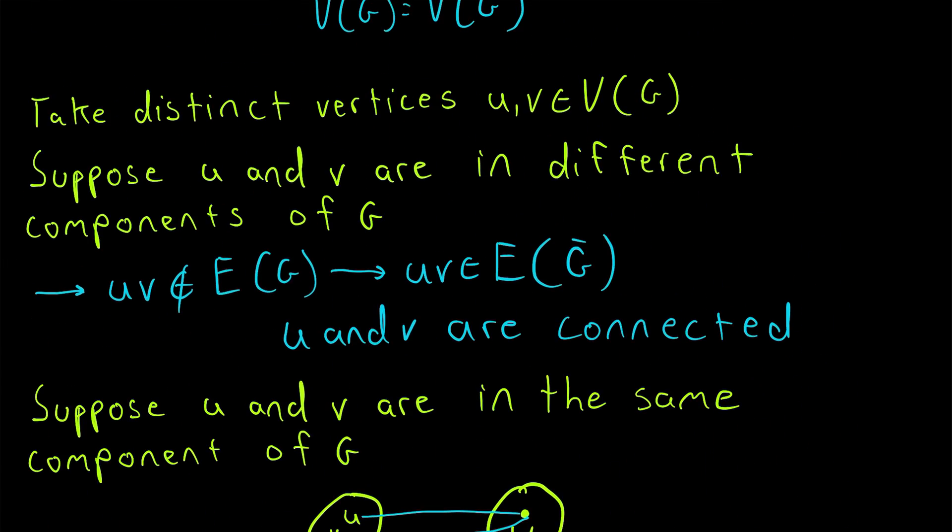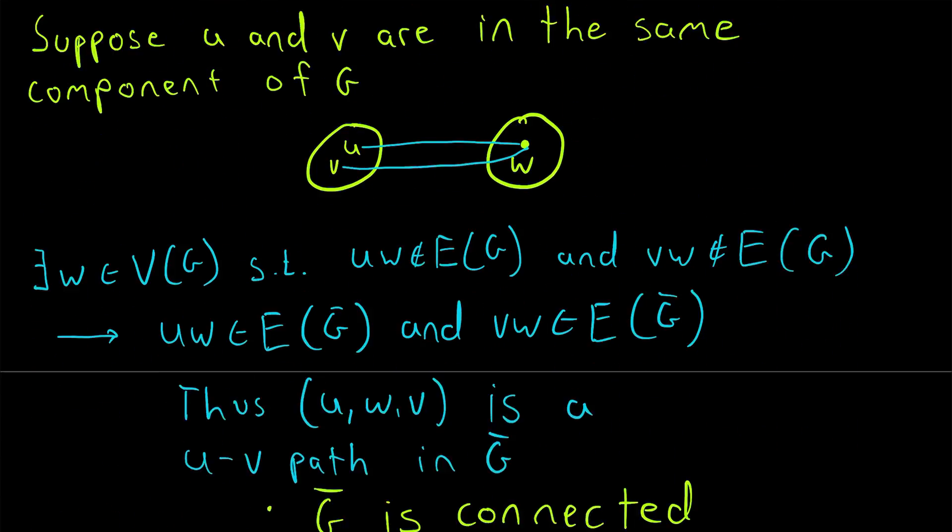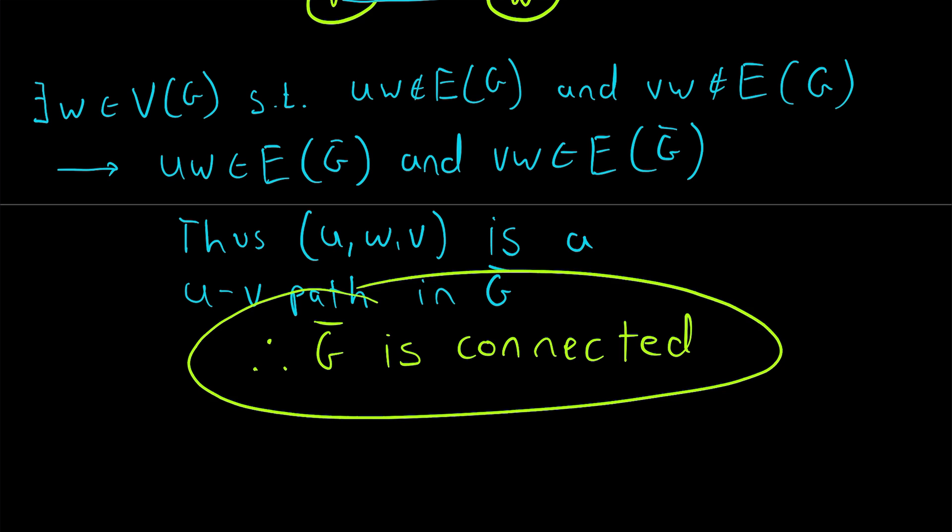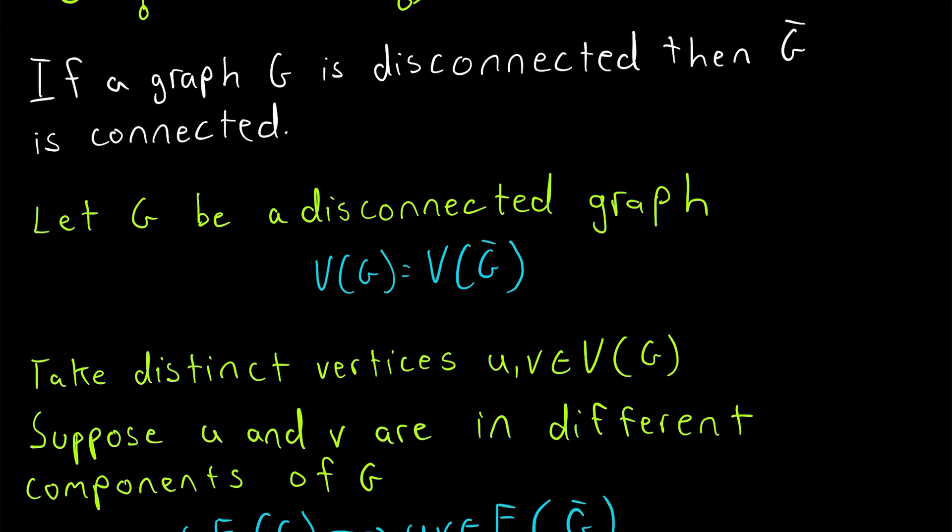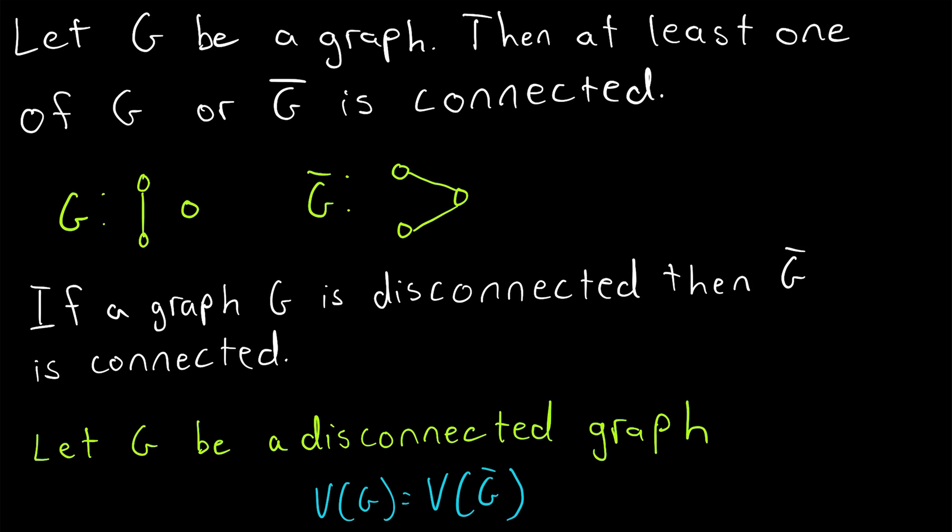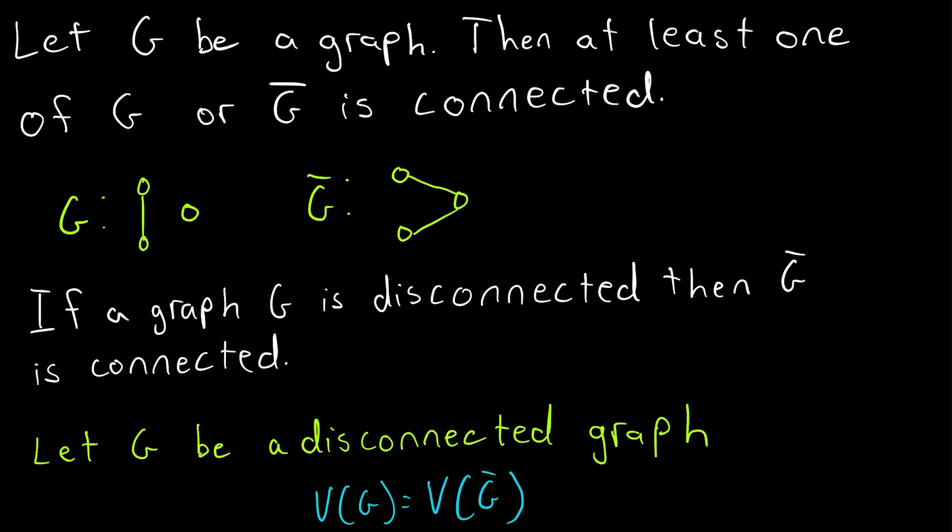So we have shown if a graph is disconnected then its complement must be connected and therefore we've proven the original theorem that at least one of a graph or its complement must be connected they can't both be disconnected.